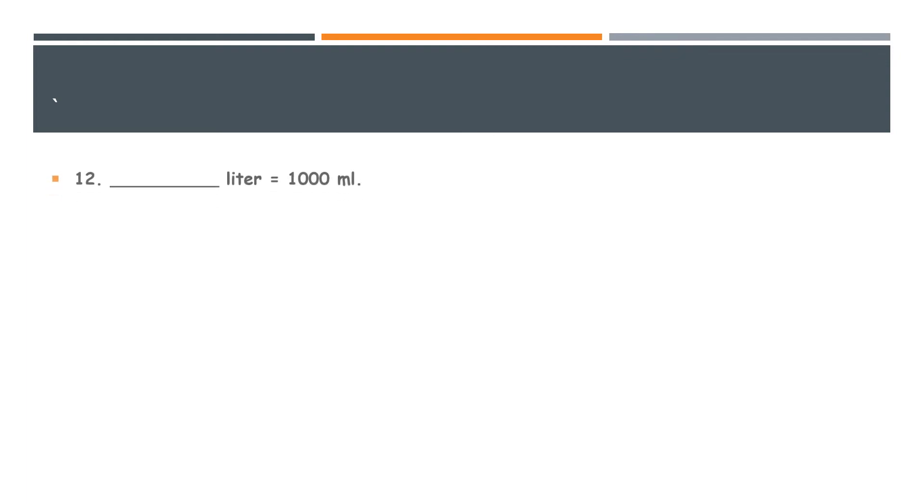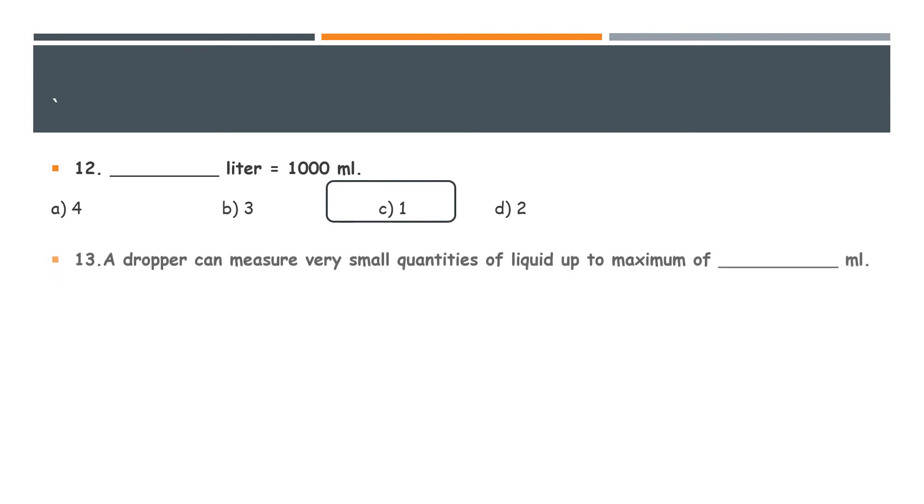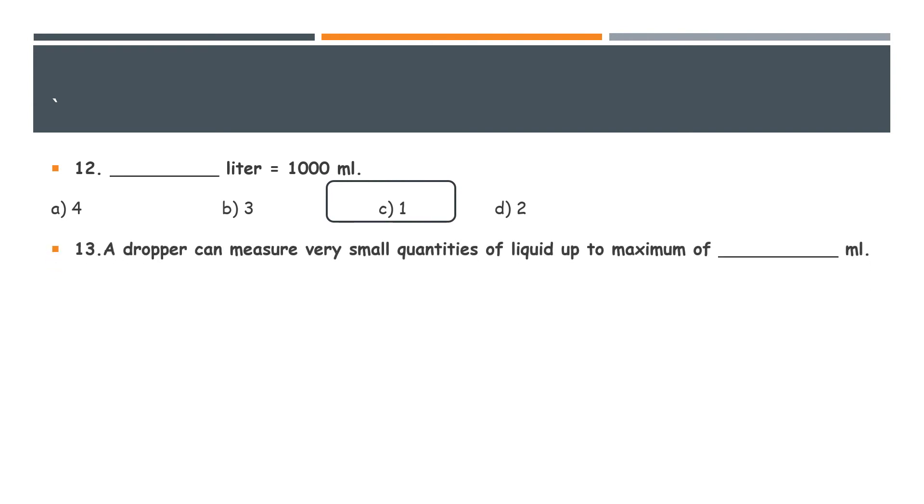Now we are going to solve MCQ number 12. Blank liter is equal to 1000 ml. Here we have the option and we know that the right answer is C, 1. The next MCQ is a dropper can measure very small quantities of a liquid up to maximum of blank ml. And we know that the real answer is 5.